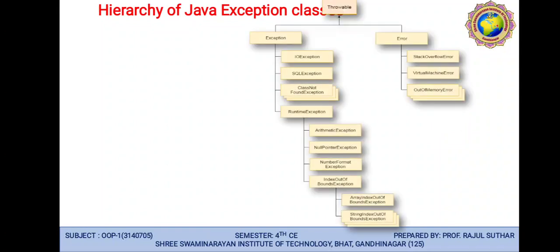This is the hierarchy of the Java exception class. It starts with Throwable, which has two types: Error and Exception. Under Error, we have StackOverflowError — whenever data accumulates beyond the stack's capacity, it causes a stack overflow. We also have VirtualMachineError, which occurs when you are running a large software like NetBeans, Oracle, Visual Studio, or Android Studio that requires more memory than available.